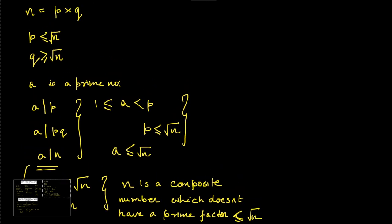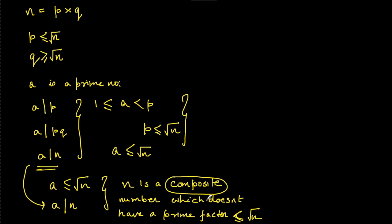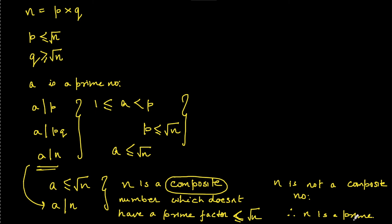Hence our hypothesis was wrong. Therefore n is not a composite number, and so n is a prime number. We have just proved that n is a prime number if there is no prime factor p less than root n which divides n. I hope you understood this problem and solution. If you haven't understood anything, put it in the comment section, and I urge you to revisit this entire solution. Thanks for watching this video.